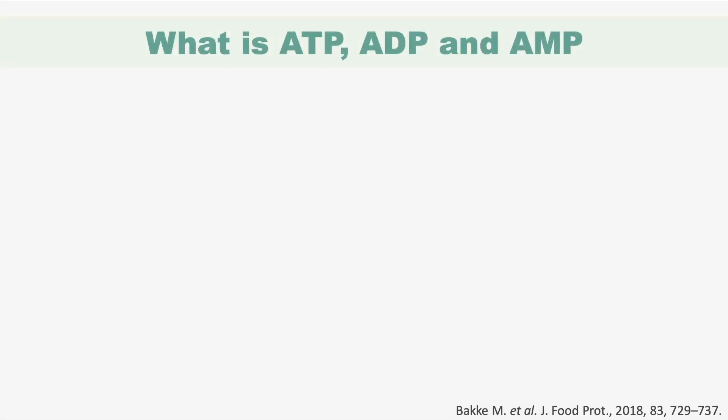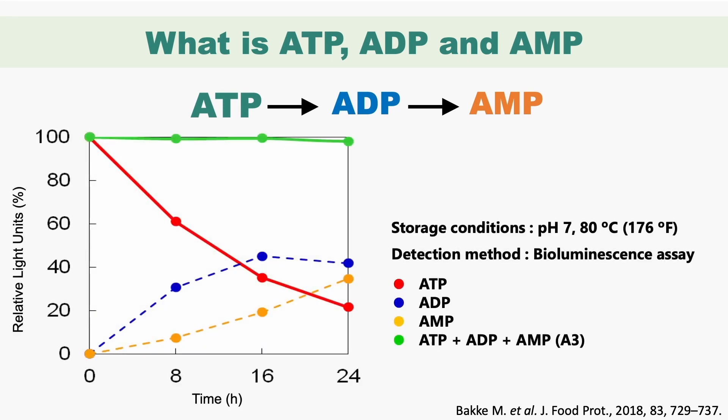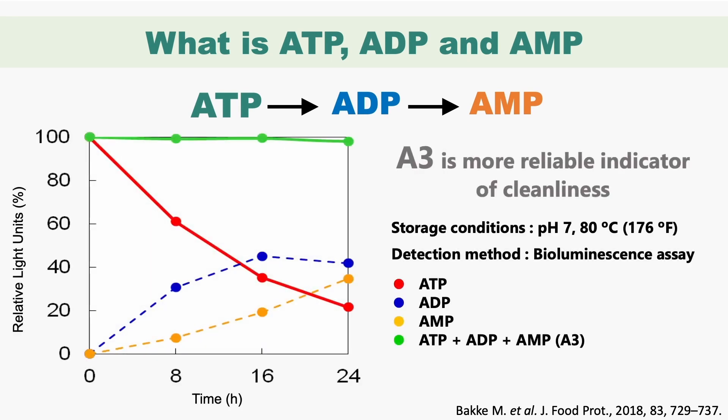What is ATP, ADP, and AMP? ADP and AMP are degradation products of ATP. This graph shows the stability of ATP — as time goes by, ATP detection becomes very low while the amounts of ADP and AMP increase. The green line indicates all three: ATP, ADP, and AMP, which is why the A3 test is a more reliable indicator of cleanliness.